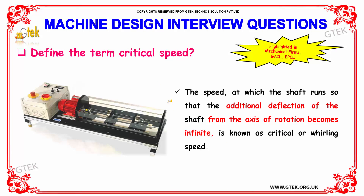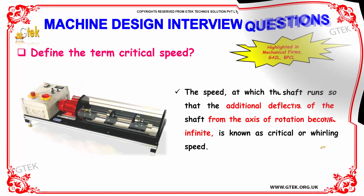Define the term critical speed. Critical speed is the speed at which the shaft runs such that the additional deflection of the shaft from the axis of rotation becomes infinite, also called the whirling speed.